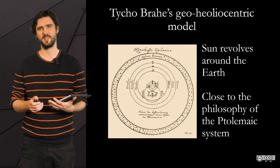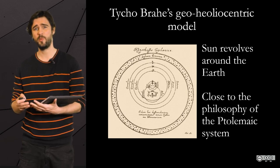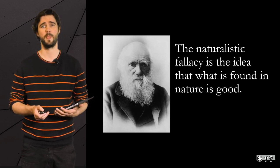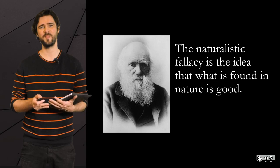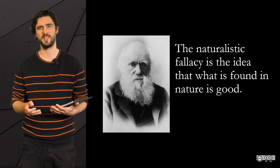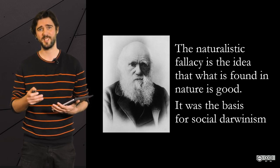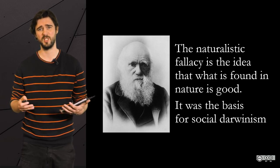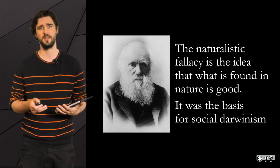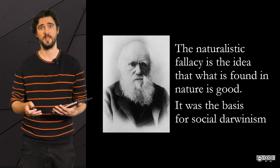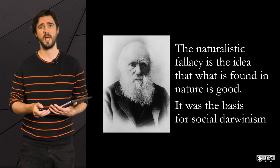You all know about Copernicus's heliocentric model — Earth revolves around the Sun, not the other way around. At the time, there was a huge fight among competing models. Tycho Brahe, for instance, clung to his geo-heliocentric model because the heliocentric model was contradicting the Ptolemaic system that had been in use for ages.